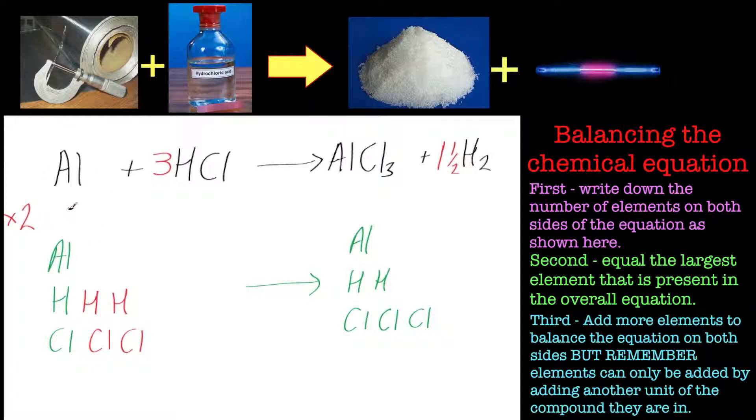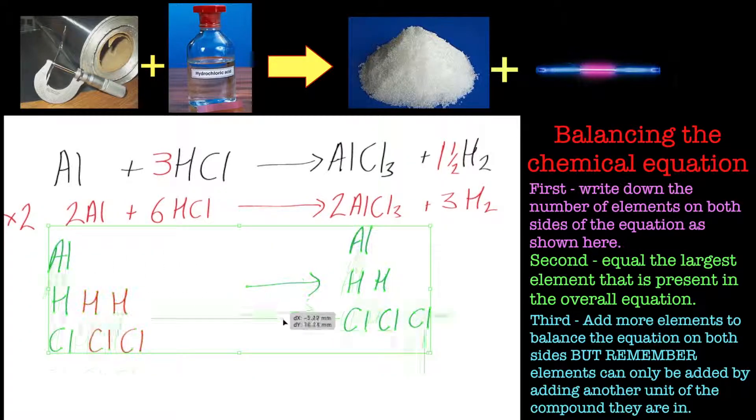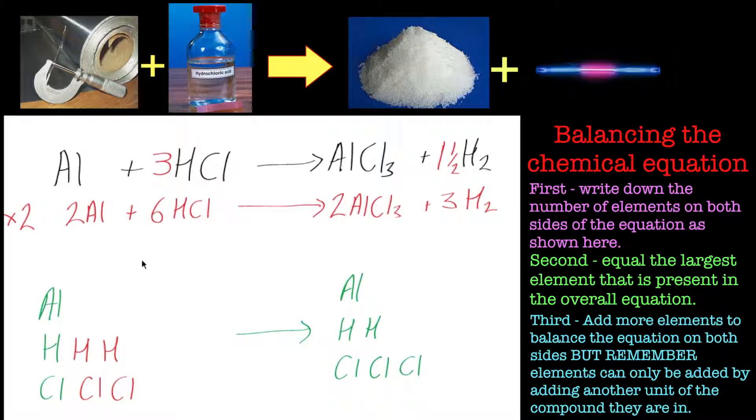In this particular case. And that will give us two aluminums plus six hydrochloric acids, to give us two aluminum chlorides plus now three hydrogens. So that's perfectly balanced now.